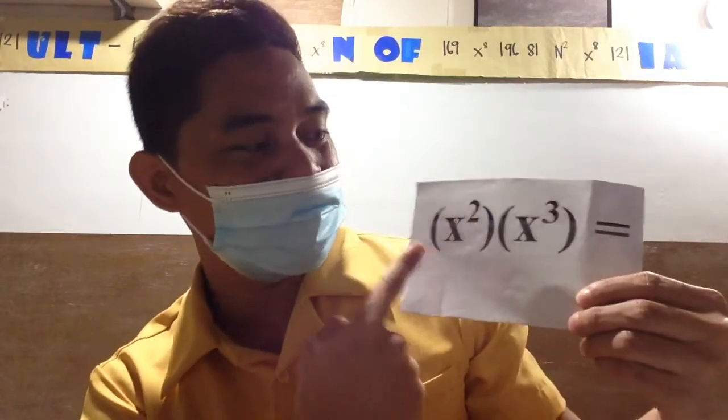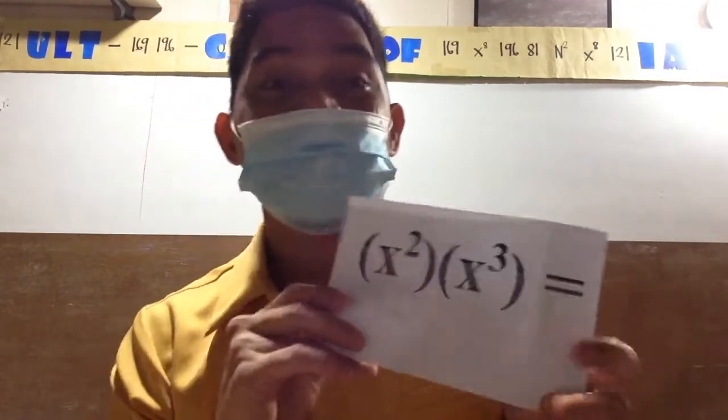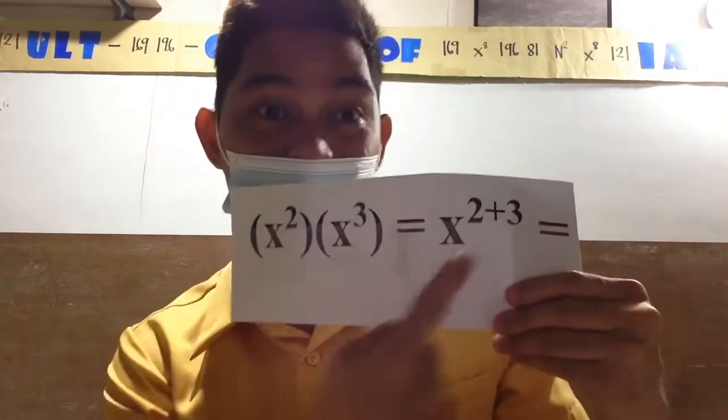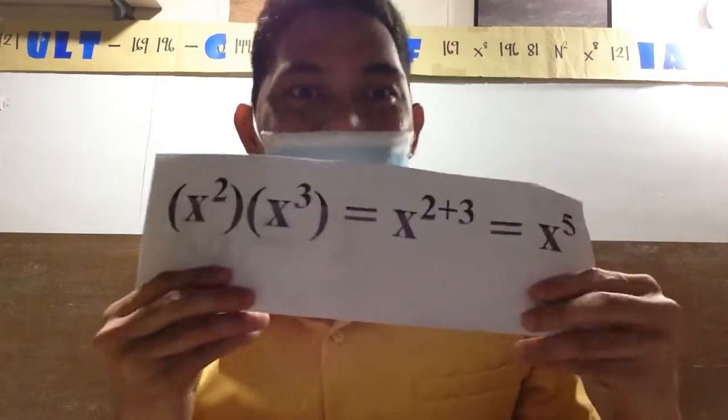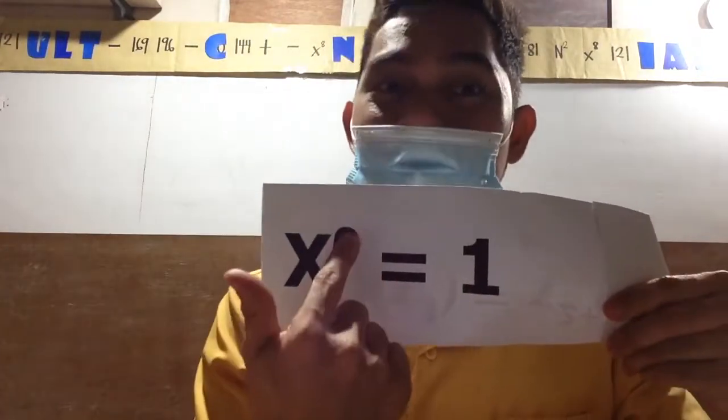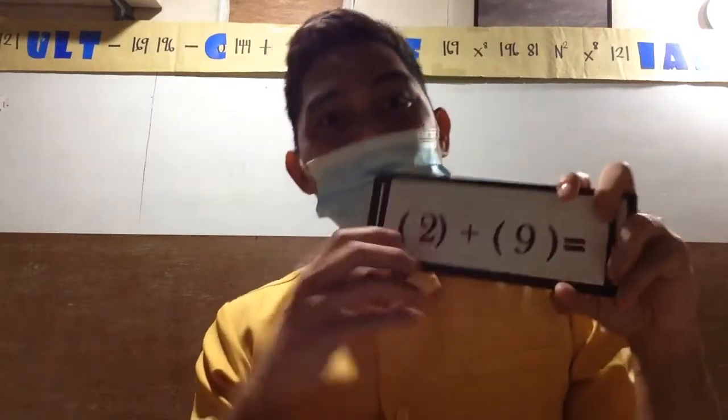Using product rules, quantity x squared times quantity x cubed will be, since they have the same base, you add the exponents so the answer is x raised to 5. Very good. Always remember, any number raised to zero is equal to one. Always remember that.